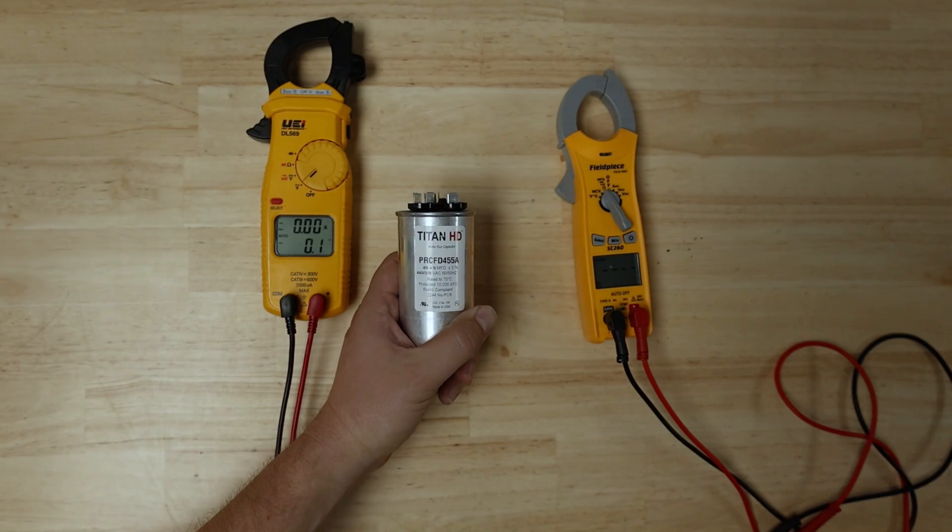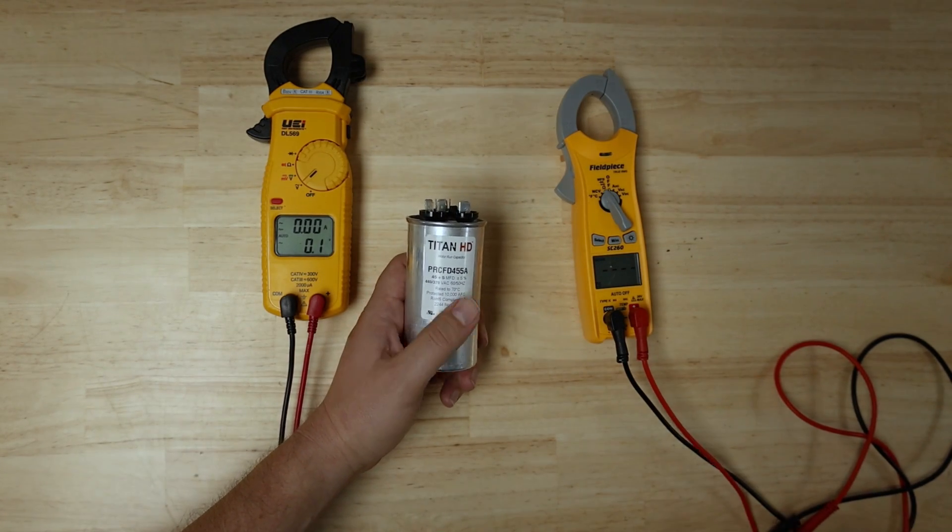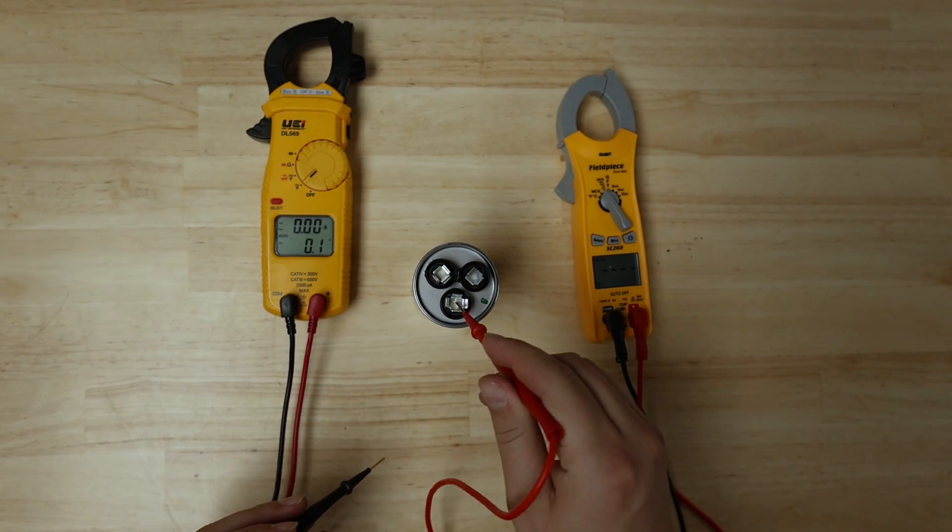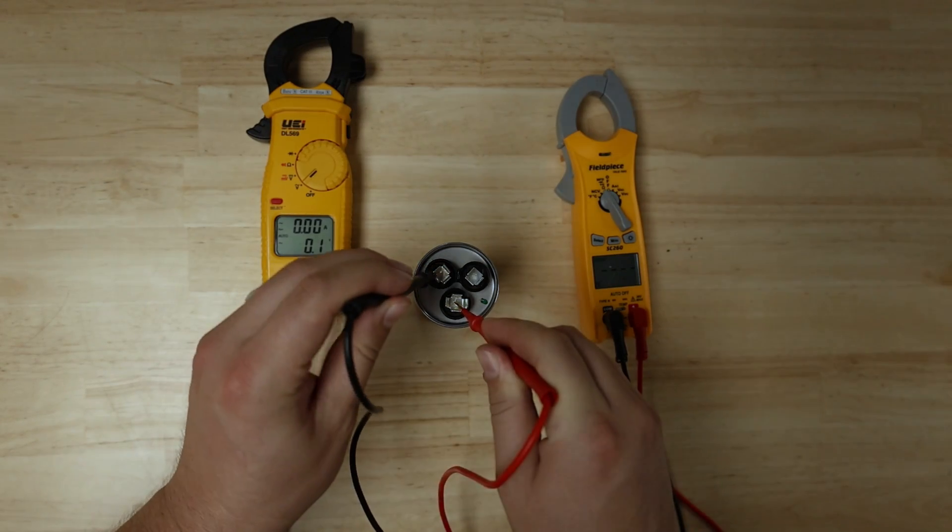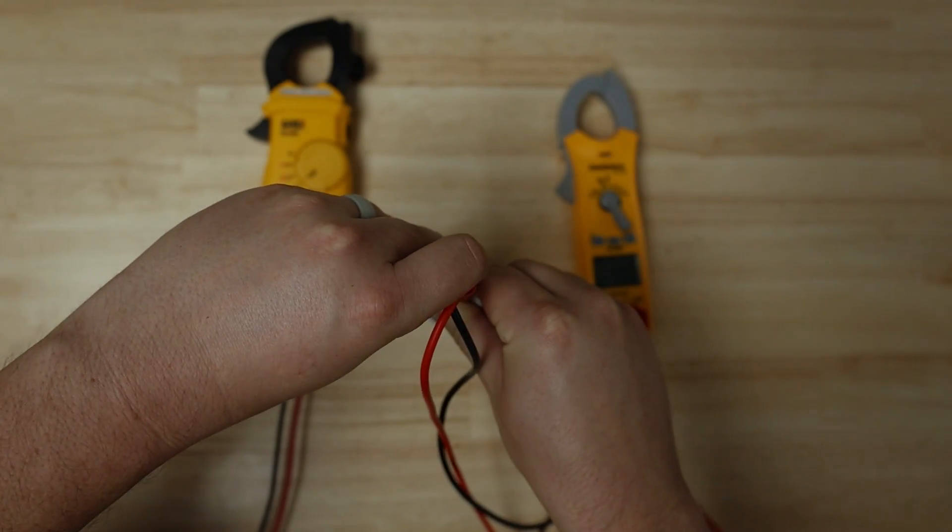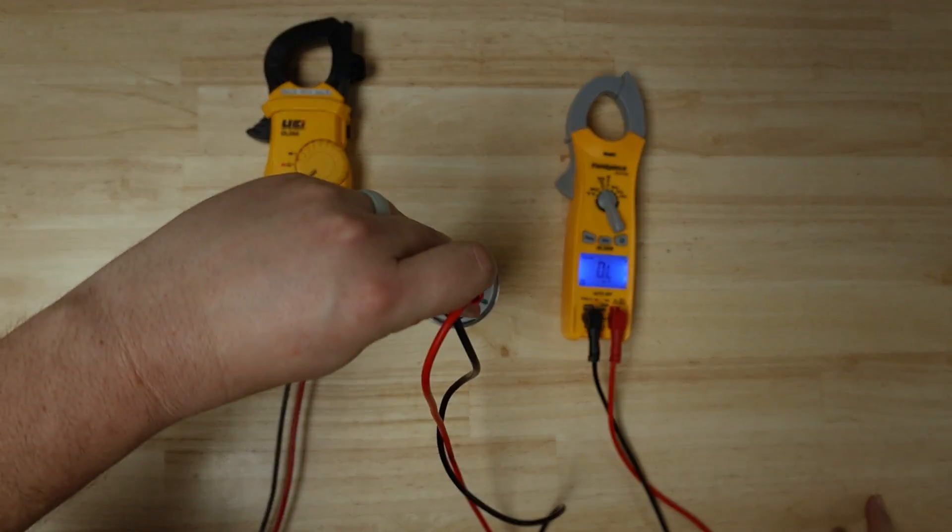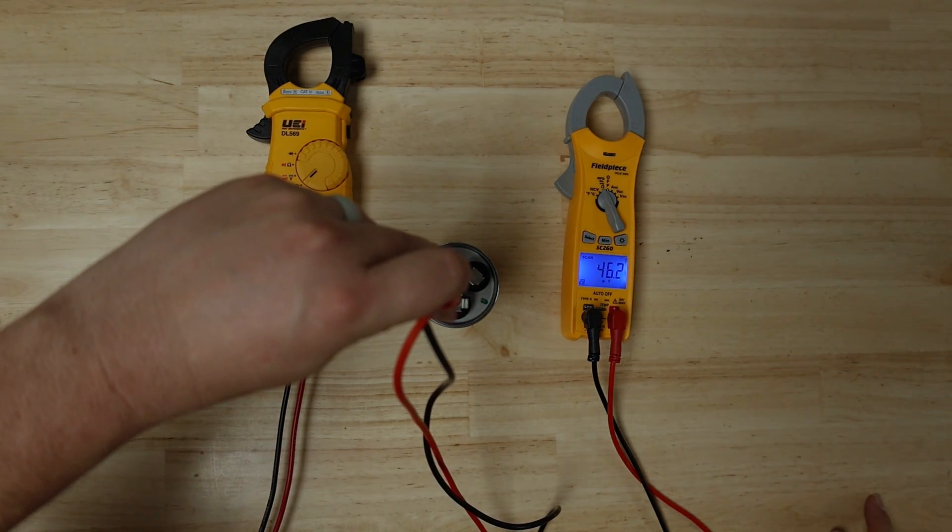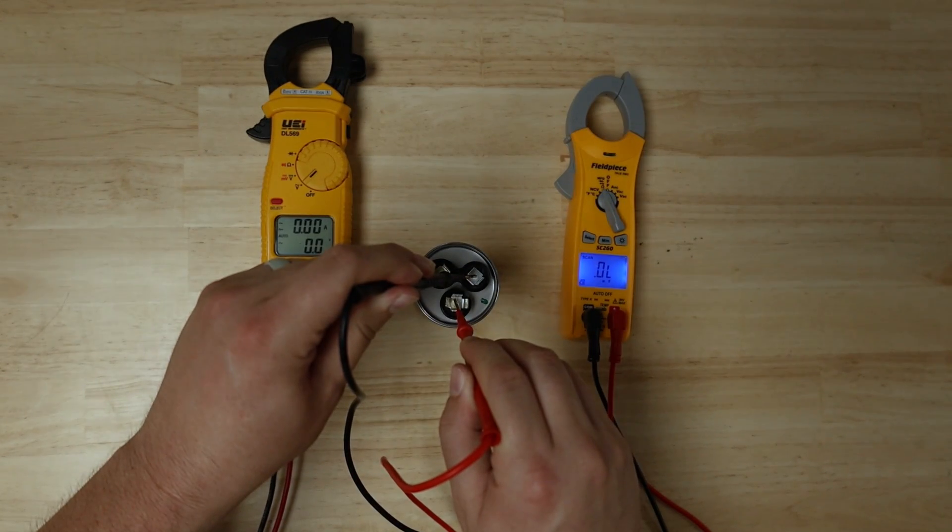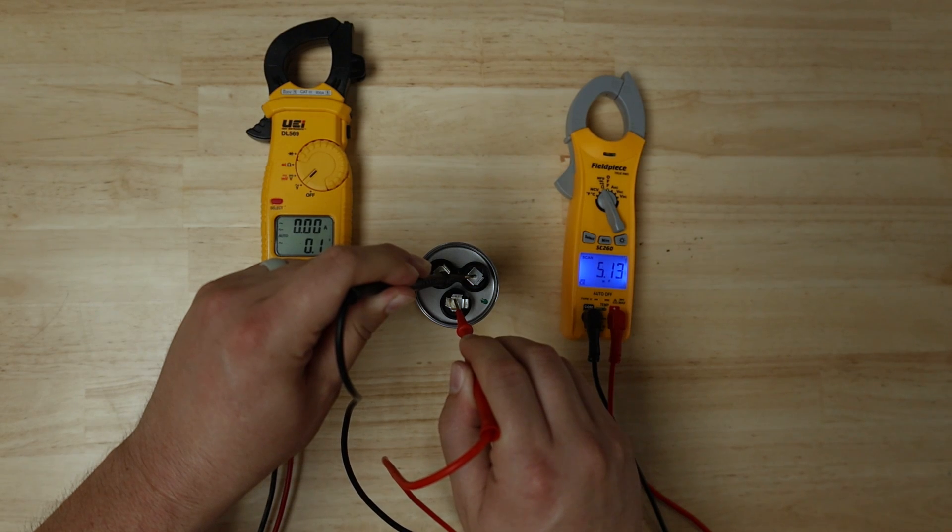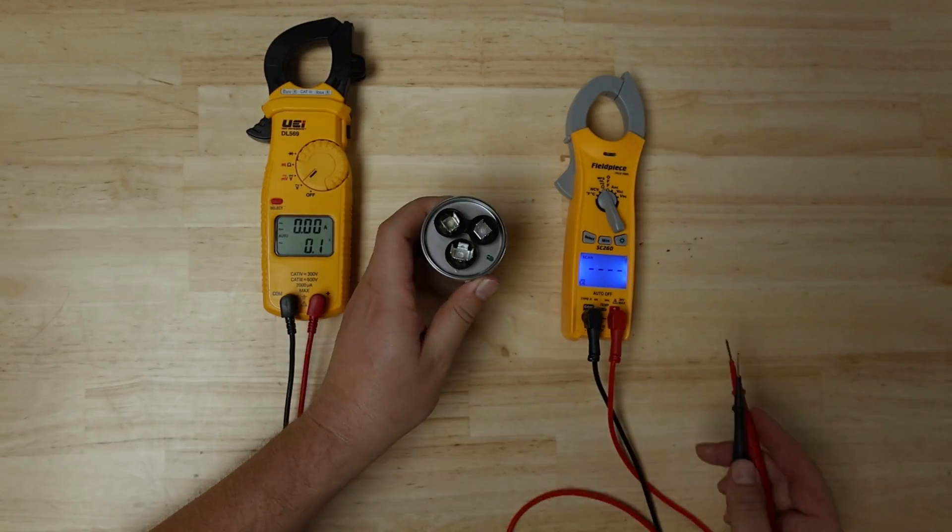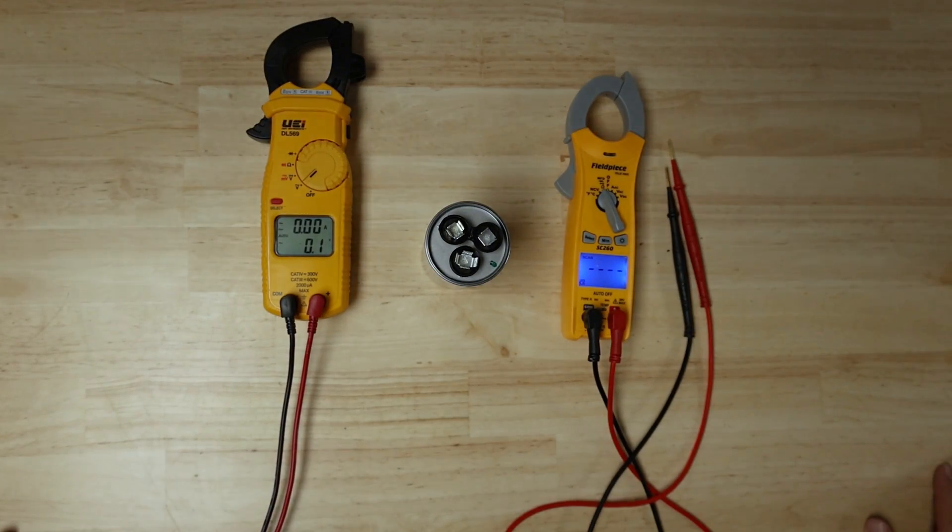Here we have a 45 by 5 dual capacitor, so it'll have both fan and compressor on it. We're going to measure between the common and the hermetic first. Our number will be 46, so we're good on the compressor side. Now we'll measure between the common and the fan side, and there we'll see 5 microfarads. So this capacitor is reading well, and that's how you measure microfarads with the Fieldpiece meter.